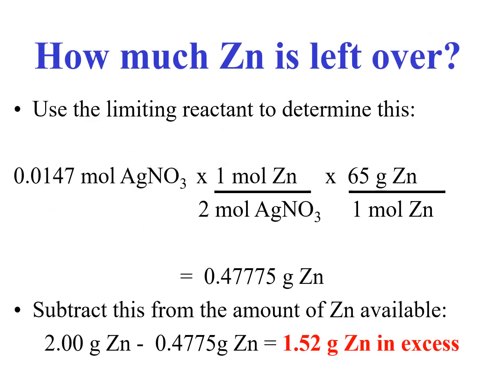How much zinc is left over? 0.0147 mole of silver nitrate. Ito yung limiting reagent. We convert this to gram of zinc that will be formed. 0.014775 grams of zinc. We subtract it from the amount of zinc available. 2, initially it was 2, minus the amount that is reacted by silver nitrate will be, you will have 1.52 grams of zinc left over or excess.